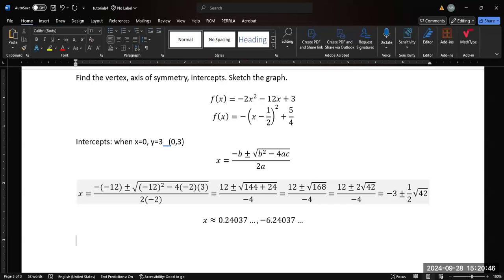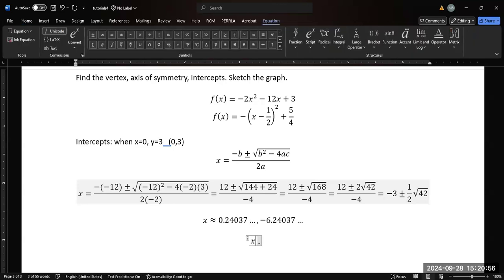All right. Now we have our intercepts. Now to get the axis of symmetry, we can either complete the square or we can use the formula for the vertex, which is just this front part of the quadratic formula without the square root, negative b over 2a, which is what I'm going to use. Negative negative 12 divided by 2 times negative 2 is going to give me negative 12 over negative 4, which is going to give me positive 3.